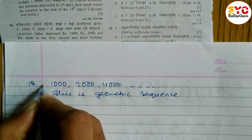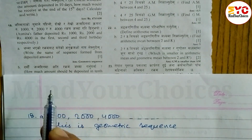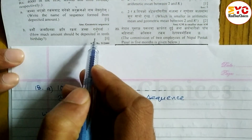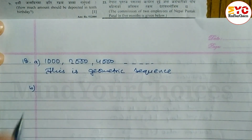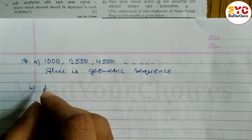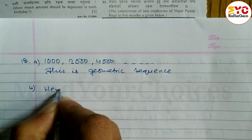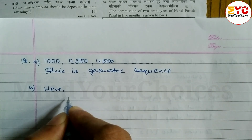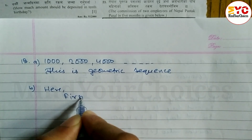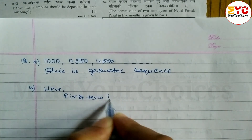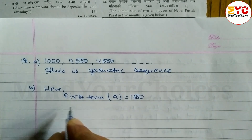Now Part B: how much amount should be deposited on the 10th birthday? In the 10th birthday, there should be the amount deposited. So we can write here — what is the value of A? The first term A is equal to 1,000.